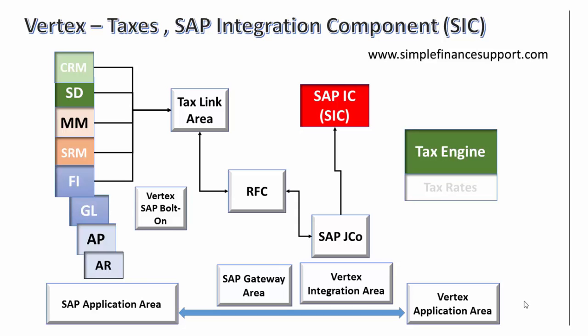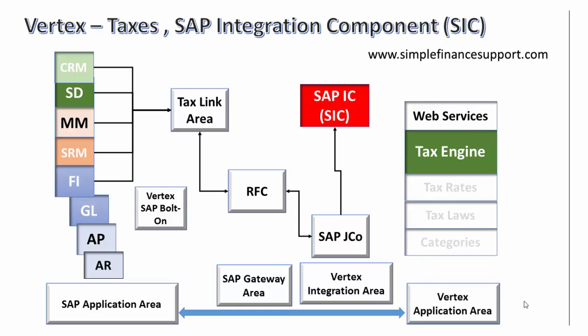The tax engine contains rates, tax rules information, and is linked with all the web services. You can use Vertex as a SaaS-based solution or on-premise. Either way, the SAP application calls the tax engine to determine taxes, and the information is returned from the tax engine back to the SAP Integration Component, then back to the Java component, and back to the RFC.